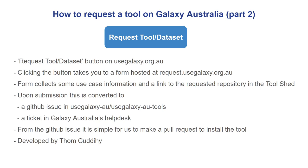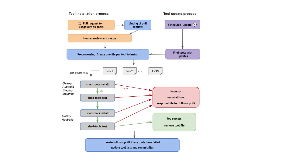Because of the automation, we can have a fairly fast turnaround time for user tool requests. This is a picture of all of the steps in tool installation. There are two processes: tool installation, which runs from the merging of a pull request, and tool updates, which run once a week. The steps in orange are the steps that require human action, and everything else is automatic.